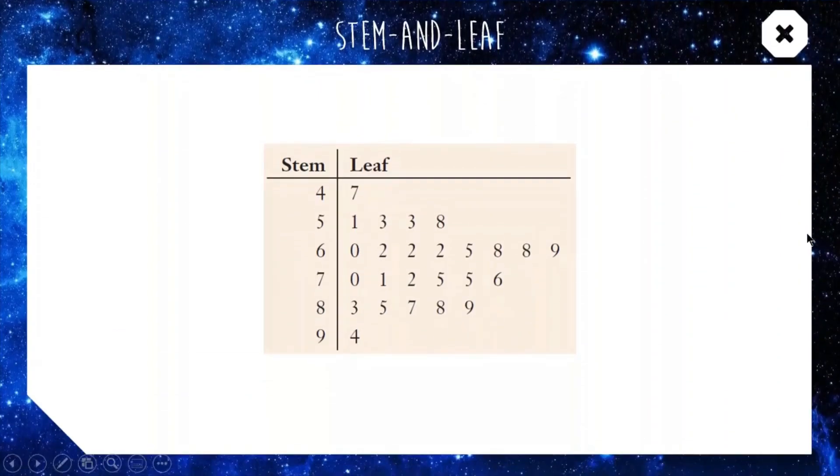Next up we have the stem and leaf plot, very popular plot. This is just basically splitting your numbers into two pieces. So this data set is essentially 47 51 53 etc, the stem is our tens and our leaves are our units in this case. This is good because you still get an idea of the shape of the data set if you want to analyze whether it's symmetric or clustered. A stem and leaf plot gives you a good idea of the shape as long as you've spoken that correctly.